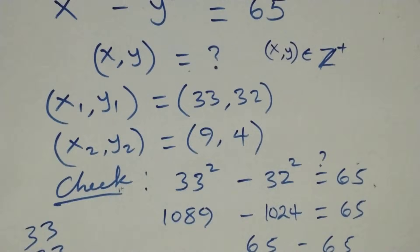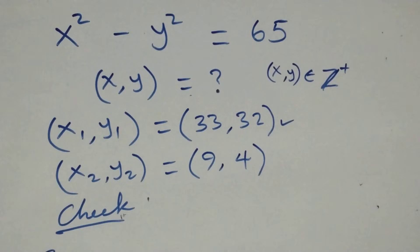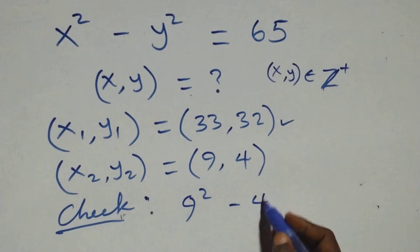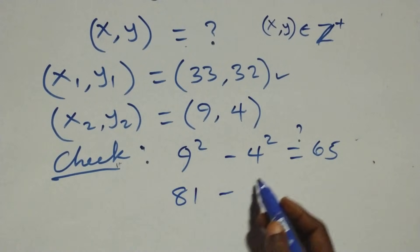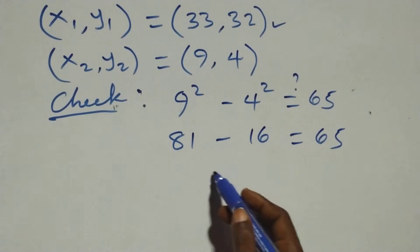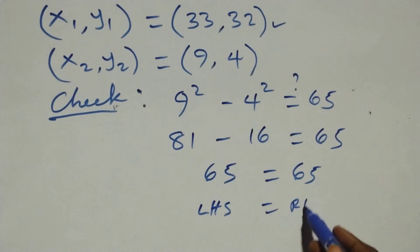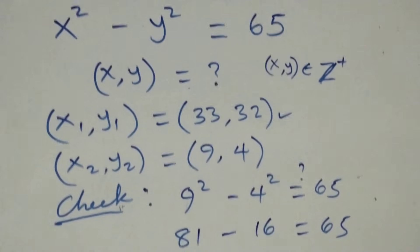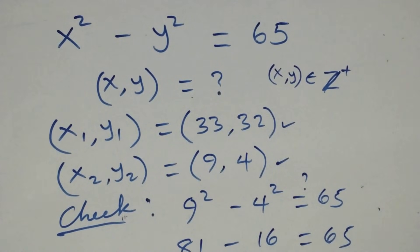Checking the second solution (9, 4): 9² minus 4² also equals 65, confirming it satisfies the equation. Thank you for watching — don't forget to subscribe for more videos, turn on the notification bell, share this video, give a thumbs up, and put your comment. See you next time!